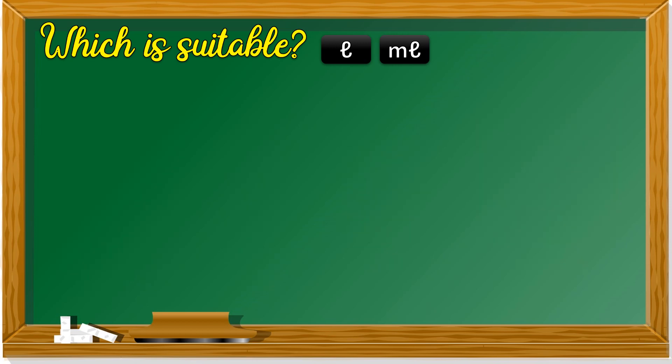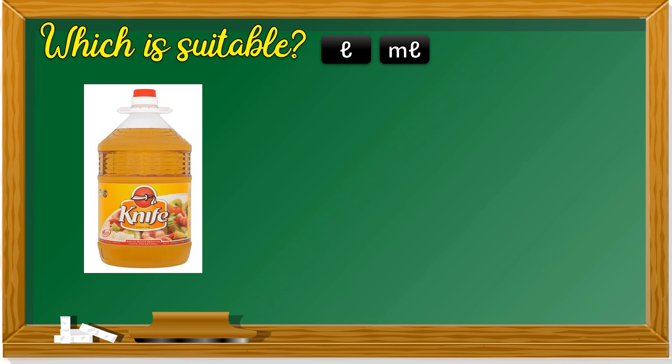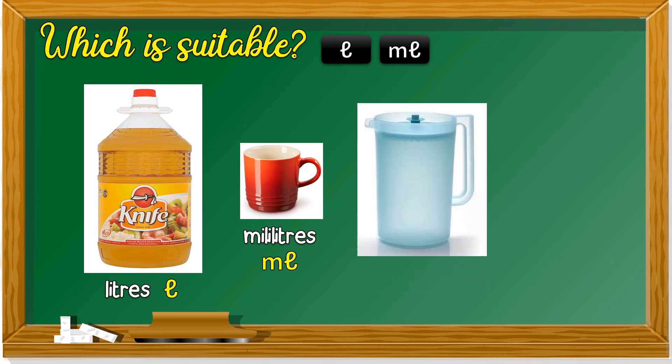We continue. A big bottle of cooking oil. Liters. L. A cup of water. L or ML? Milliliters. ML. A jug of water. L or ML? Liters. L.